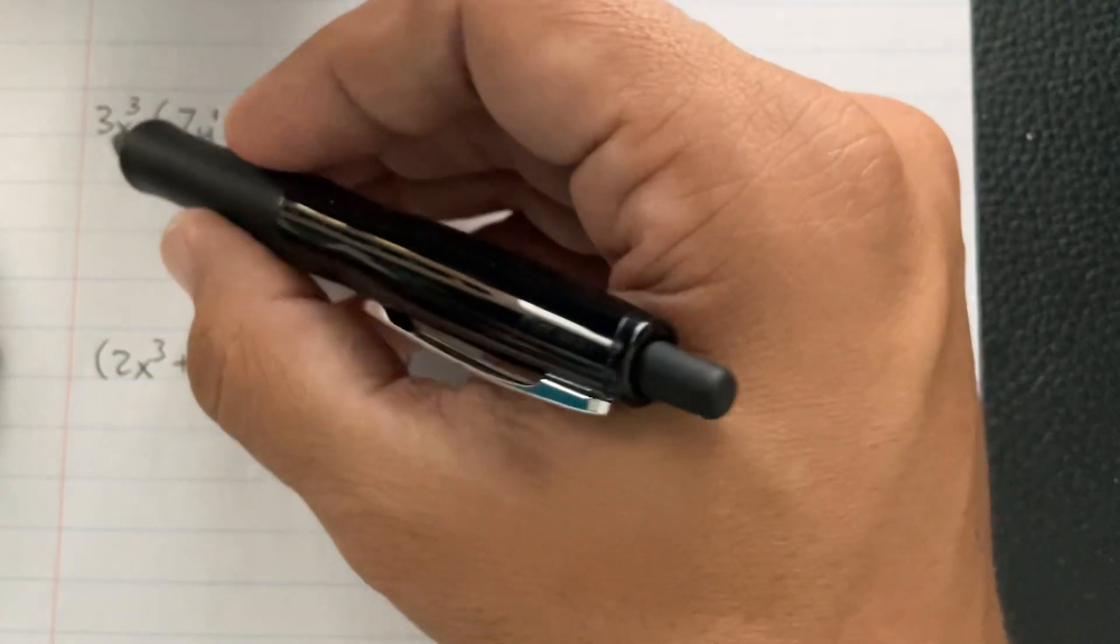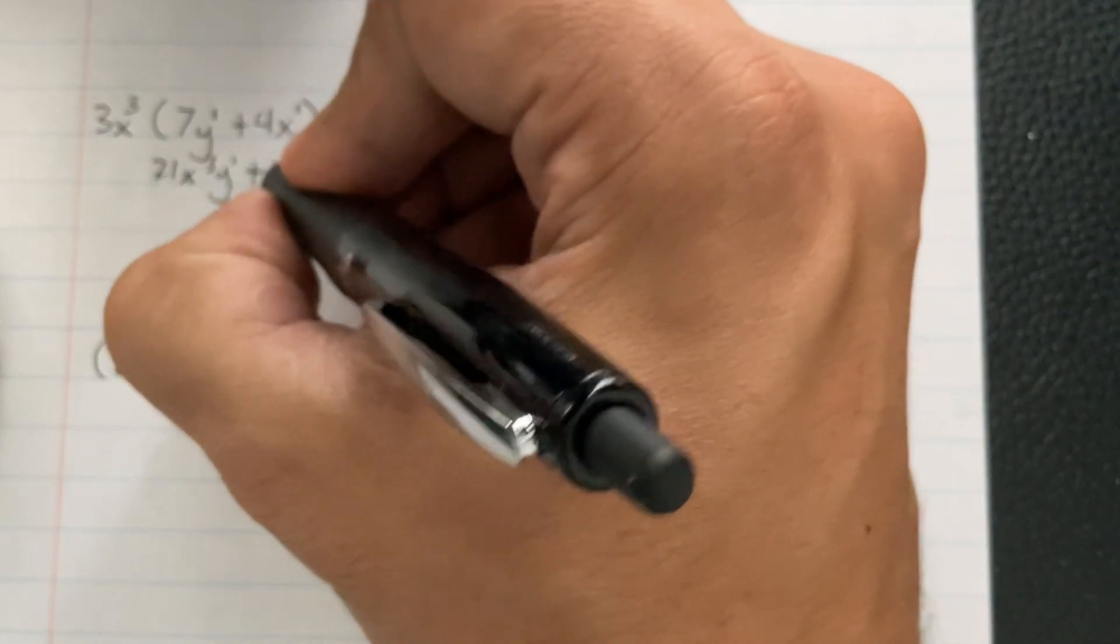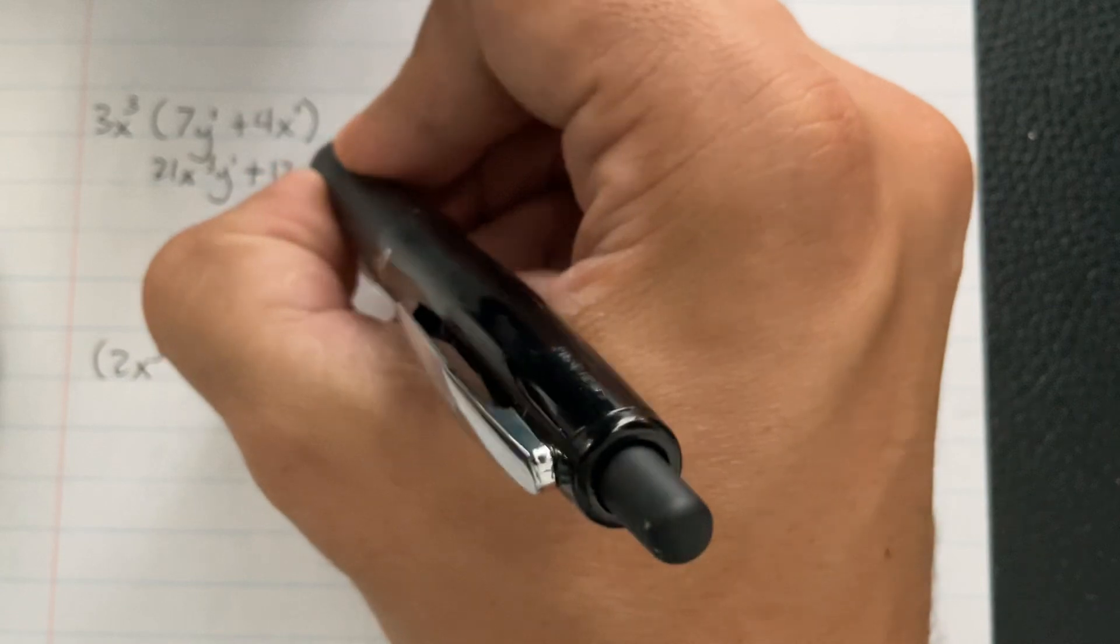And then 3x³ times 4x is going to make 12x⁴. And then that one's done.